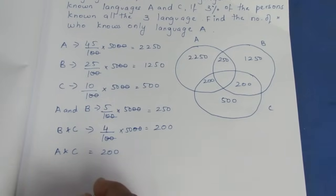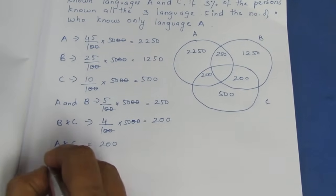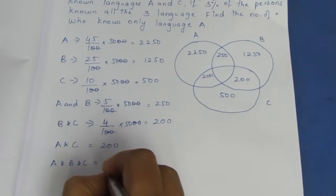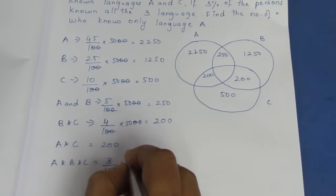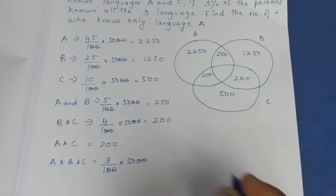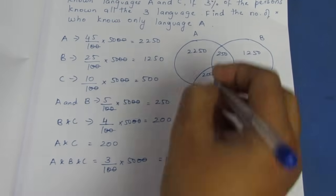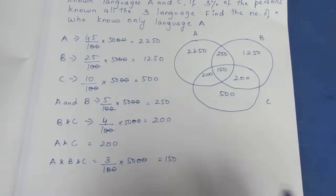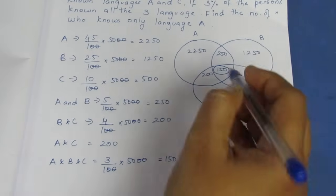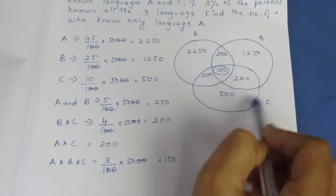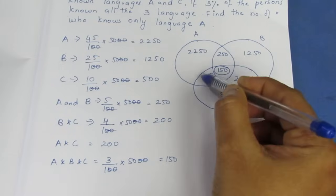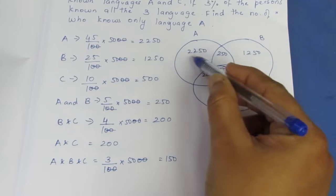All 3 languages: 3%. So A intersection B intersection C is 3 divided by 100 into 5000. This is the complete 3-set intersection. Cancelling, we get 150. So A intersection B intersection C is 150.